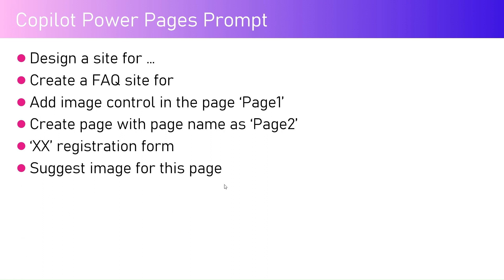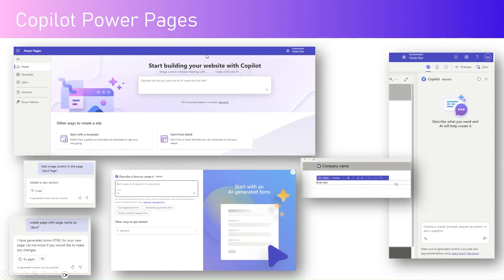Some of the prompts I've tried include: design a site for a cricket management application, design a site for a hospital management system, create a FAQ site for something, add an image control in the page with a specified page name, create a page with a name like 'Page 2' or an 'XX registration form', or suggest an image for a page. These prompts let you build Power Pages components with AI giving responses in the correct order to build your site seamlessly.